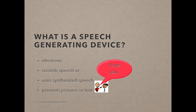While synthesized speech was once very robotic and a little strange sounding, technology has vastly improved in recent years. Pictures or text are provided for the user to know which buttons to use to activate specific desired messages. These devices can also use what's called text-to-speech, where the user can type on a keyboard the message that they want.